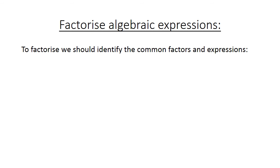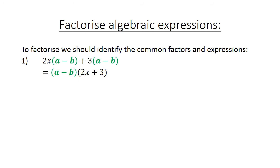Factorize algebraic expressions. To factorize, we identify the common factors in expressions. Number 1: the common factor is (A minus B). We take out the common factor — (A minus B) comes first in brackets, and what's left is in brackets (2X plus 3).